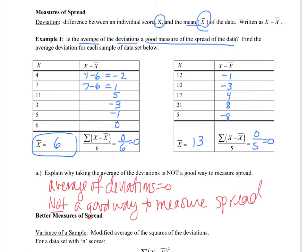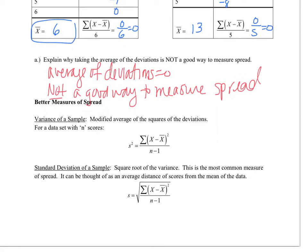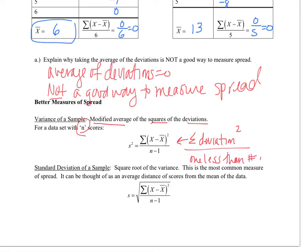So if the average of the deviations doesn't work for us, what does? The next thing we talk about is what's called variance of a sample. We are going to do a modified average of the squares of the deviation. So if I have n scores, I am going to find all of their deviations, square them, and then divide by 1 less than the number of scores. This notation means we find the deviation squared, sum them all up, then divide by n minus 1.